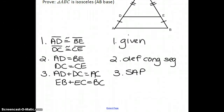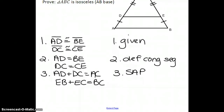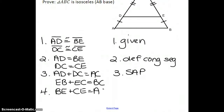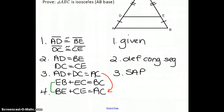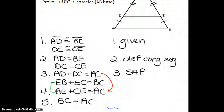Now with the Segment Addition Postulate established, we can work with substitution. Taking the given information converted into equal lengths, we substitute into one of the segment addition equations: replacing AD with BE and DC with CE. This changes that line using our information from step 2. Now the parts of both original segment addition equations look exactly the same, so by the transitive property, the length of BC equals the length of AC.